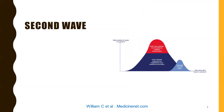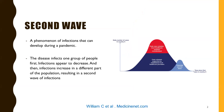To briefly explain what a second wave is: there is a bell-shaped curve where the X axis shows the number of cases in the country and the Y axis shows time since the first case. This is the first peak, and soon after, towards the end of the first wave, there could be a potential second wave, which has been studied in many other pandemics.